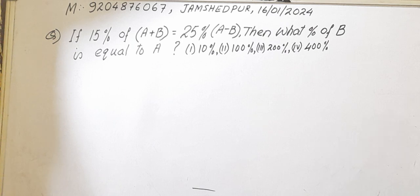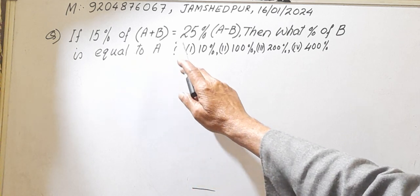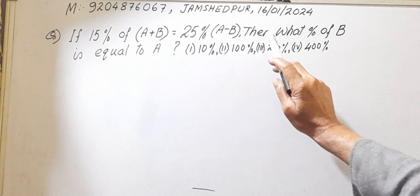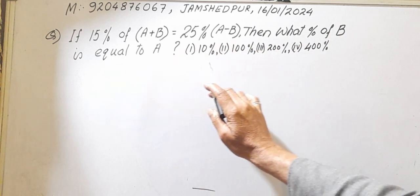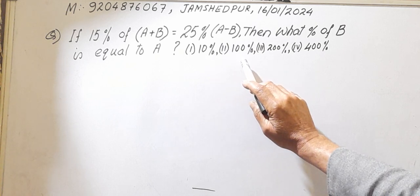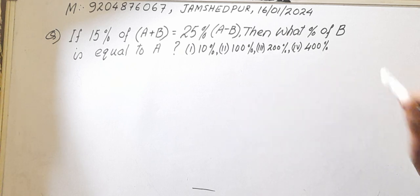The question is here: if 15% of A plus B equal to 25% of A minus B, then what percent of B is equal to A? There are 4 options: first option is 10%, second option is 100%, third option is 200%, fourth option is 400%.